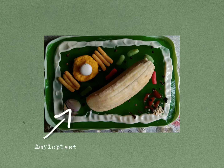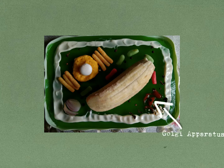The amyloplast is primarily involved in storing starch and detecting gravity. A Golgi body, also known as a Golgi apparatus, is a cell organelle that helps process and package proteins and lipid molecules.